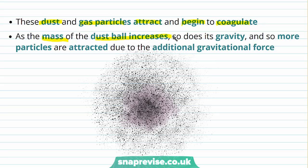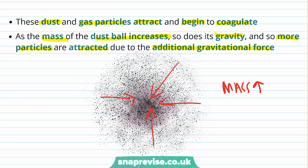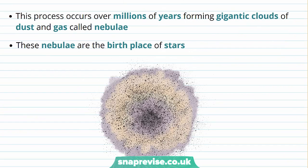As the mass of the dust ball increases, so does its gravity, and so more particles are attracted due to the additional gravitational force. Here we have dust particles coming into the centre, resulting in an increase in mass as well as an increase in gravitational force G. This process doesn't happen overnight — it occurs over millions of years, forming gigantic clouds of dust and gas called nebulae, which are the birthplace of stars. Here we've got an illustration of a nebula.